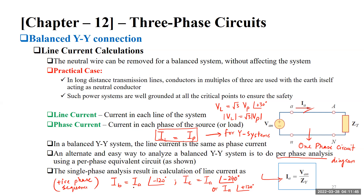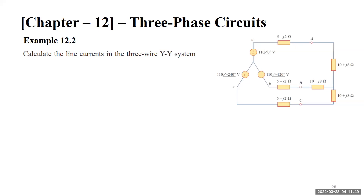For positive phase sequence, once I_a is found: I_b = I_a∠−120°, and I_c = I_a∠−240° = I_a∠+120°. Let's solve Example 12.2 from the textbook. We are asked to calculate the line currents in a three-wire Y-Y system. The source is Y-connected with neutral n, and the load is also Y-connected with neutral N.